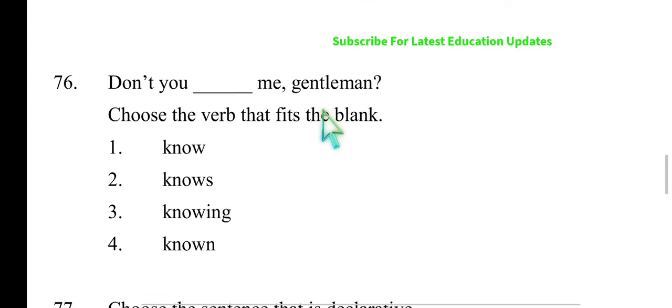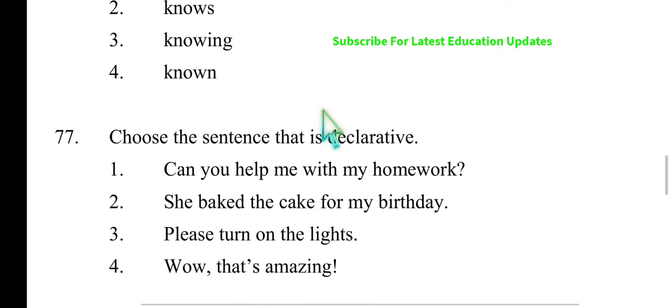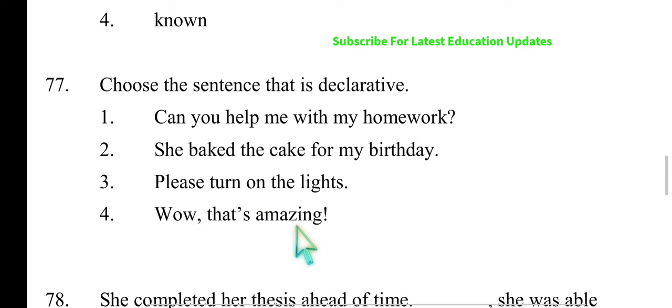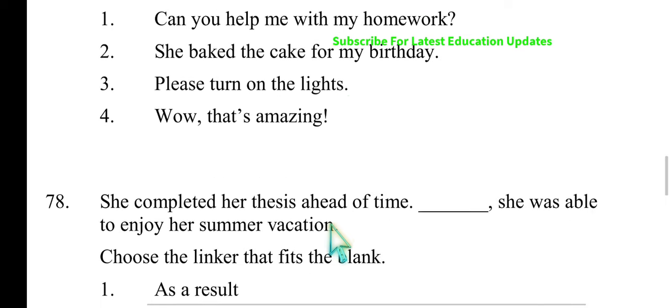Next: 'Don't you know me, gentlemen?' Choose the sentence that is declarative — very, very easy. Nobody could go wrong here. 'She baked the cake for my birthday' — declarative. 'Can you help me?' — interrogative. 'Please turn on the lights' — imperative. 'Wow, that's amazing!' — exclamatory sentence.